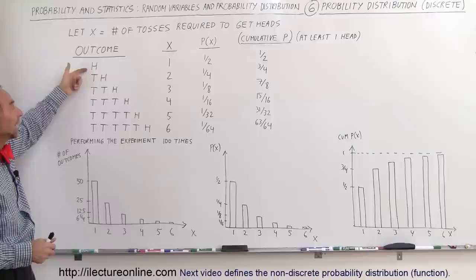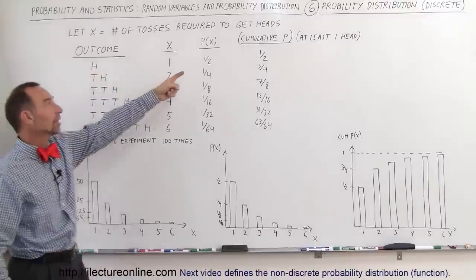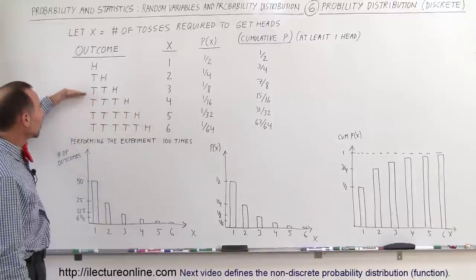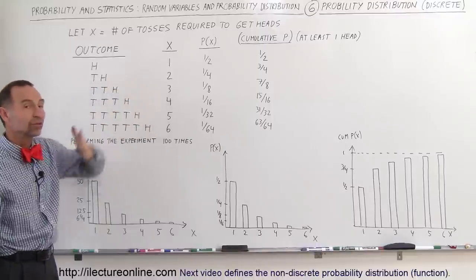We toss it once, we get heads, there's a 50% chance that will happen, x will be 1. We toss it twice before we get a head, x equals 2. We toss it three times before we get a head, x equals 3, and so forth.